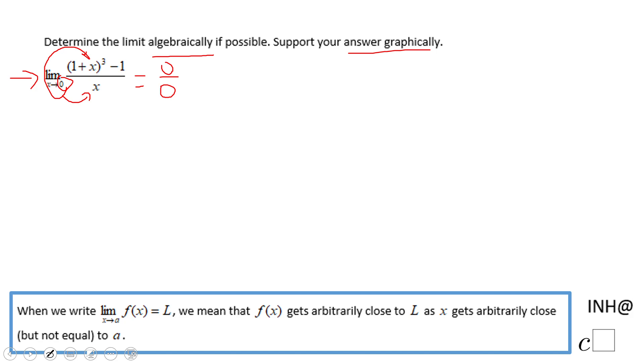And the algebraic method we're going to use here for getting a limit is very simple. We're going to have to write the canonical form of this binomial (1+x) to the third power and you can use the binomial theorem or you can use Pascal's triangle.